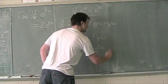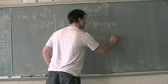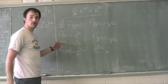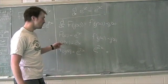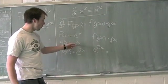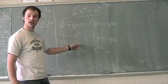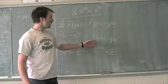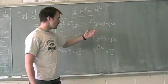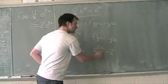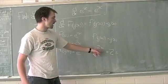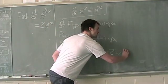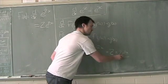We take that times g prime of x. g prime of x is the derivative with respect to x of g, or of 2 times x. The derivative of 2 times x is simply 2. So there is our chain rule result, and if we rewrite e to the 2x times 2, we get 2 times e to the 2x.